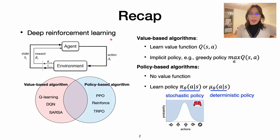Let's firstly recap. In deep reinforcement learning, agents observe the environment to gather states, and based on that make actions to change the environment to new states. At the same time, it can send a reward as feedback to the agent. Then the agent will learn something to make better actions based on the experience.